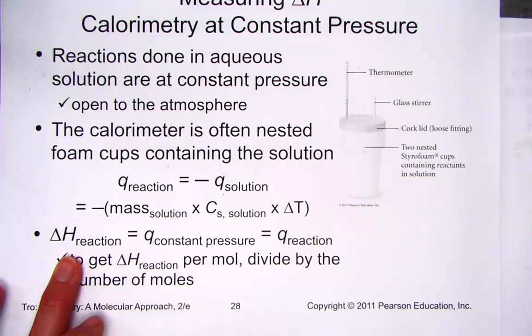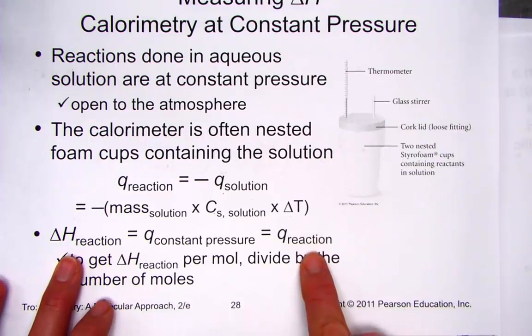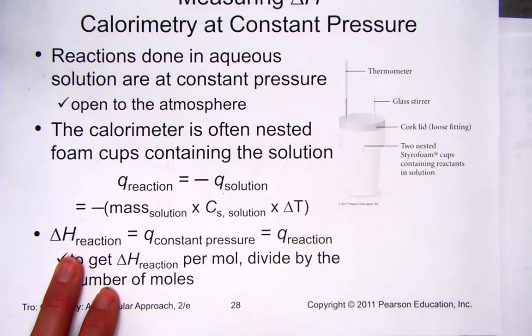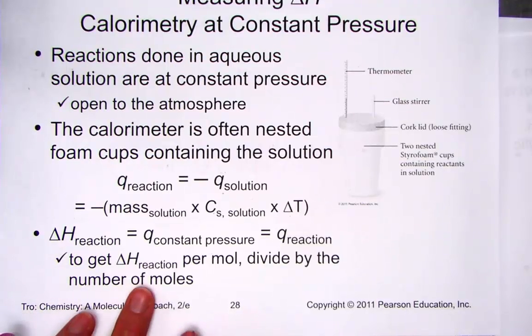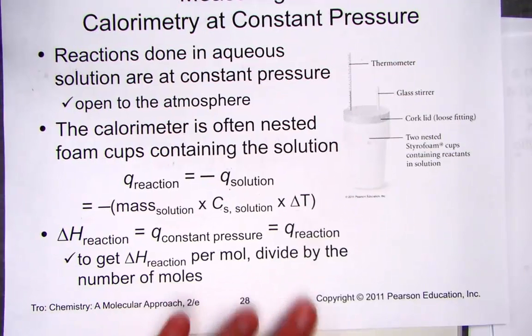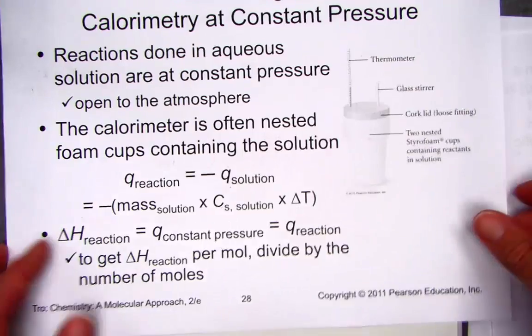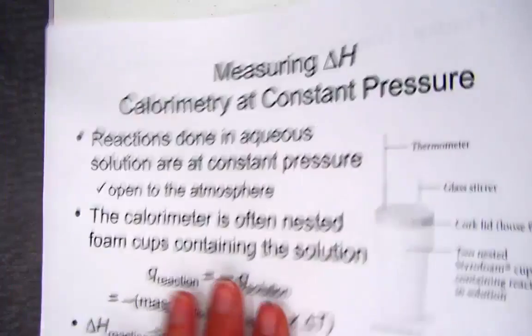The heat of the reaction is Q of the reaction, measured with a coffee cup calorimeter. To get delta H for the reaction per mole, we divide by the number of moles of our reactant. Let's take a modeled example.